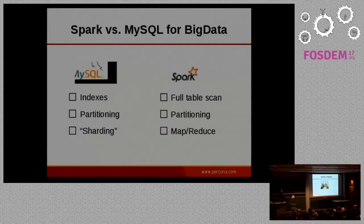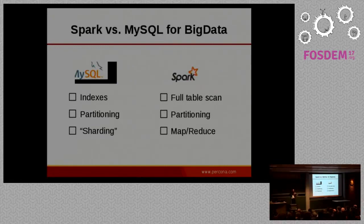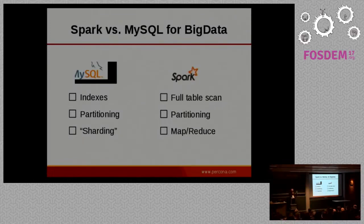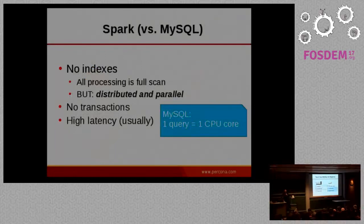Let's compare Spark with MySQL. If you need to process a big query with MySQL, you'll want indexes and partitioning — MySQL will read data from one partition if created properly. There's also possible sharding, which is not built-in but can be implemented. Spark, on the other hand, doesn't have indexes — I'll describe why later. It has partitioning too, but you can process each partition in parallel. Instead of sharding, it has a kind of map-reduce architecture, sending processing requests to different nodes.